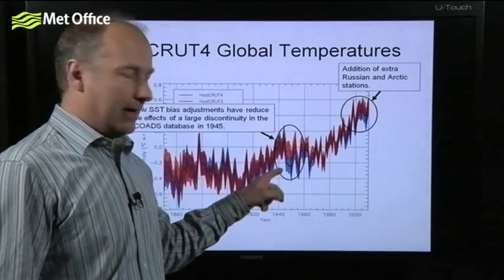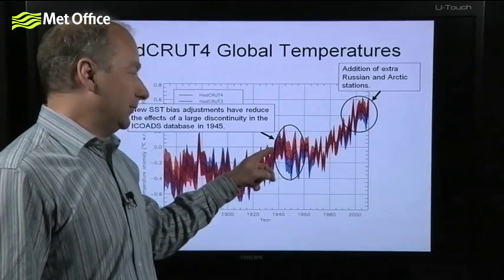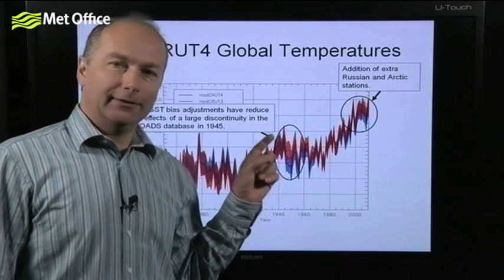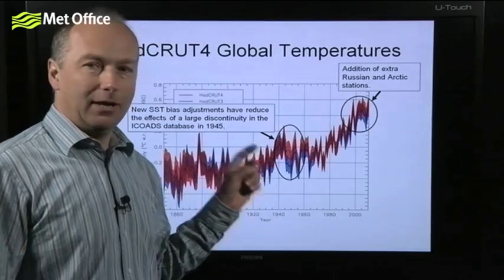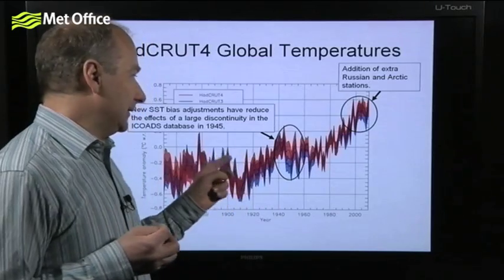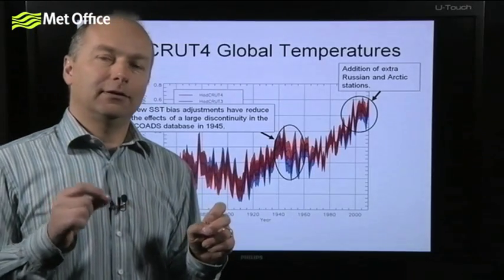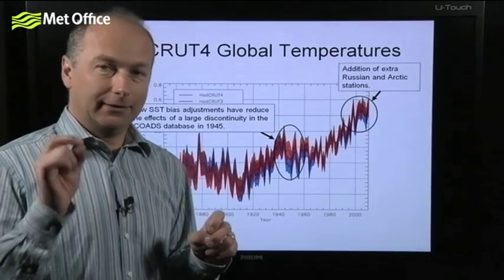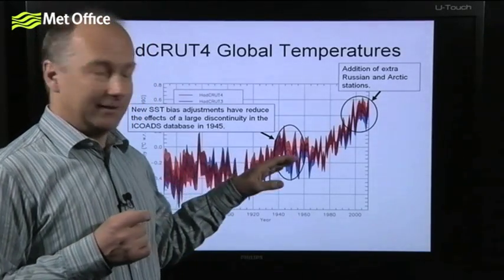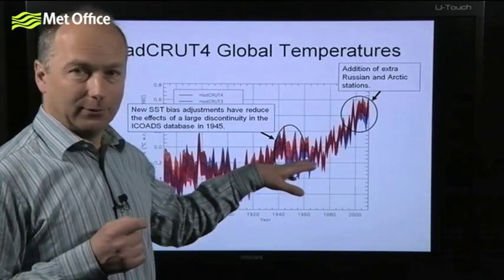The most important issue here is related to the particular drop-off in temperatures seen at the end of the Second World War in HadCRUT3. This was associated with the fact that following the war, there were many more British ships measuring using the method of hauling in buckets over the sides of ships. This leads to cooler temperatures because of evaporative cooling of the water in the bucket — cooler than temperatures measured by drifting buoys or engine room intakes. In this new analysis, we've taken account of that, meaning global temperatures are slightly warmer in the middle part of the 20th century.